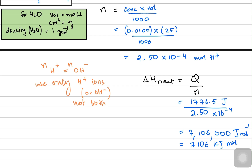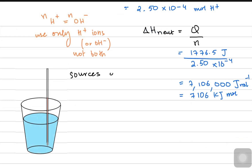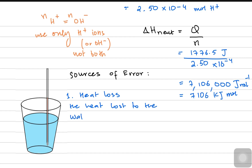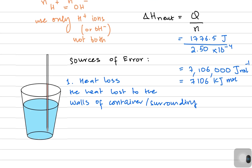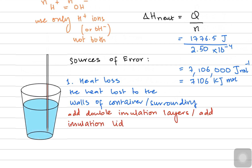Moving on to the sources of error in a calorimeter. The first error is heat loss — because you are using a calorimeter in an open environment, heat is lost to the walls of the container or the surrounding environment, which may make your value smaller than the actual value. To minimize this, you can add a double insulation layer around the styrofoam cup or add an insulating lid on top.